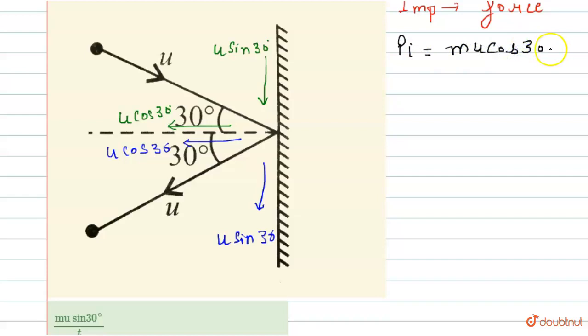Initial momentum is equals to m u cos 30 degree i cap minus m u sine 30 degree j cap. This is the first equation.